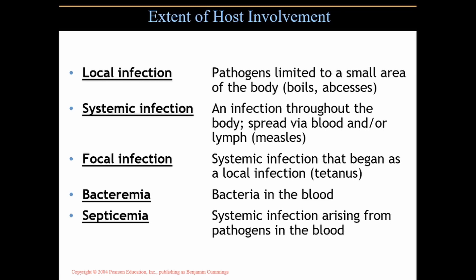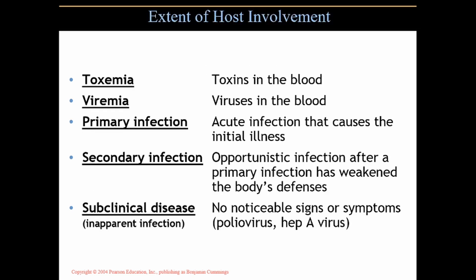Bacteremia means bacteria in the blood; septicemia is a systemic infection arising from pathogens — typically bacteria — in the blood. Bacteremia alone is not something to worry about, but developing septicemia is a problem because it's a systemic infection spreading through the body via the circulatory system. Toxemia means toxins in the blood — with septicemia, bacteria produce toxins circulated in the blood causing vomiting, diarrhea, or hemorrhaging. Viremia means viruses traveling through the circulation.